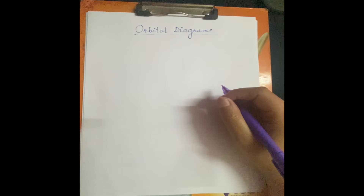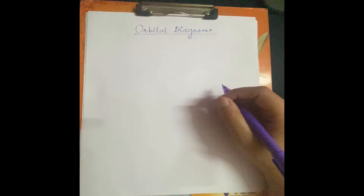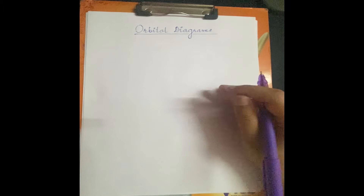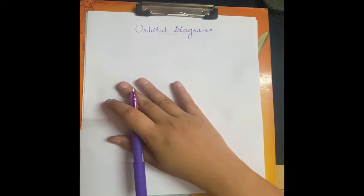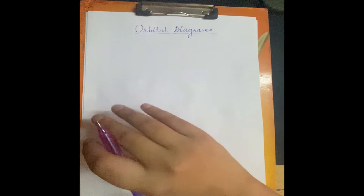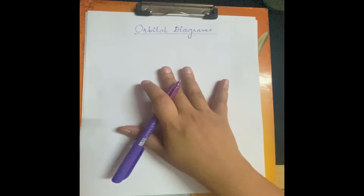Hello everyone, in this video we will see what orbital diagrams are. As you all know, we have learned how to calculate valency, electronic configuration, number of electrons, number of protons, what mass number is, and what atomic number is. Now the next topic that comes after this is orbital diagrams.